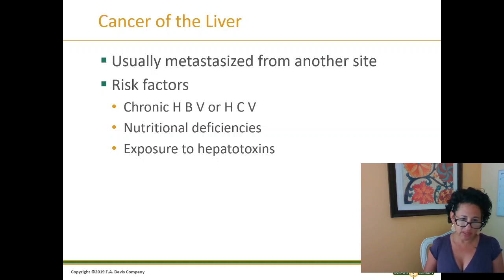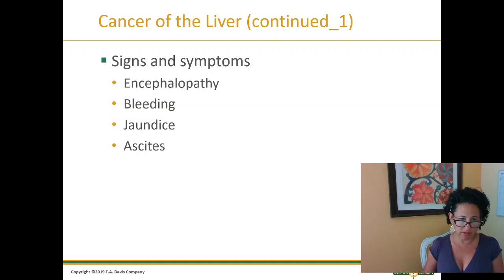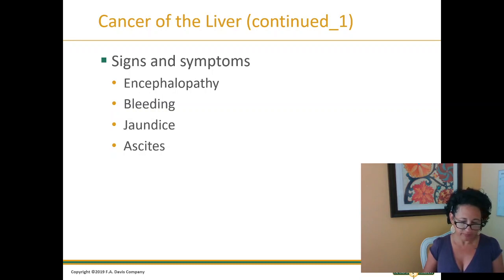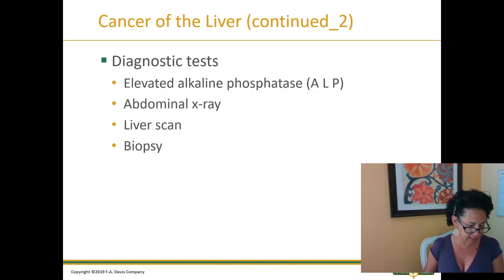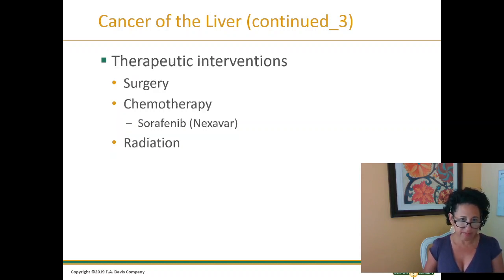Cancer of the liver: risk factors include hepatitis, nutritional deficiencies, and exposure to hepatotoxins. Signs and symptoms include encephalopathy, bleeding, jaundice, and ascites. Diagnostic testing will be ordered by the doctor. Interventions include surgery, chemotherapy, and radiation.